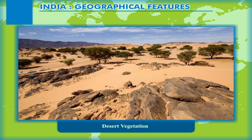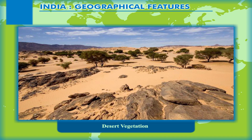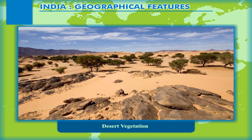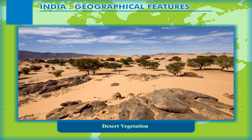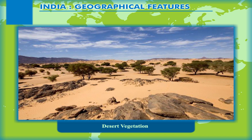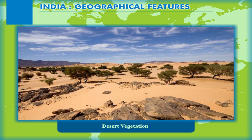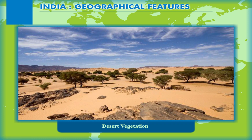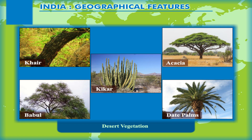Desert Vegetation. It is found in areas where rainfall is less than 100 cm. The vegetation is in the form of short, stunted trees which are mostly thorny and have long, deep roots to withstand dry conditions. Kher, babool, keekar, akashia, date palms, etc. are found scattered in this region.